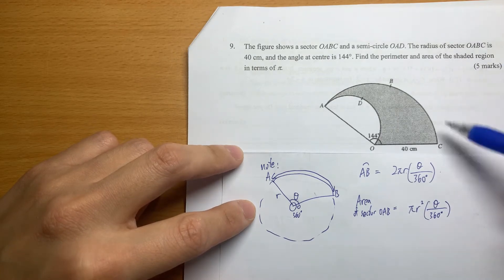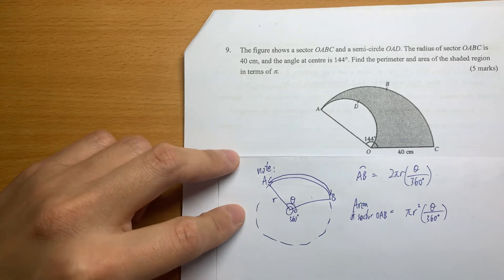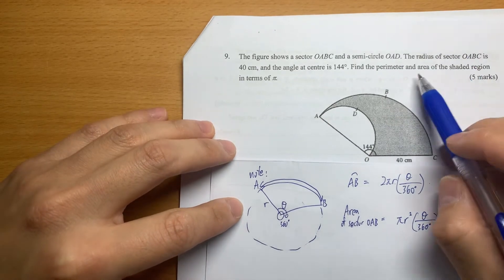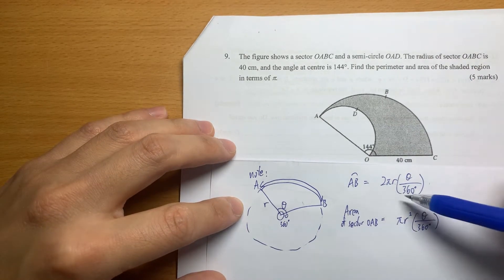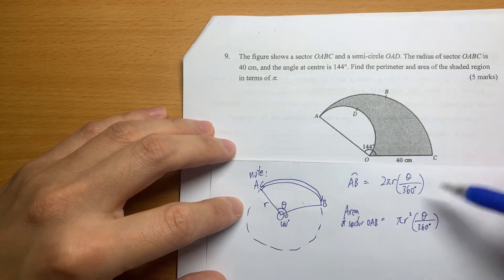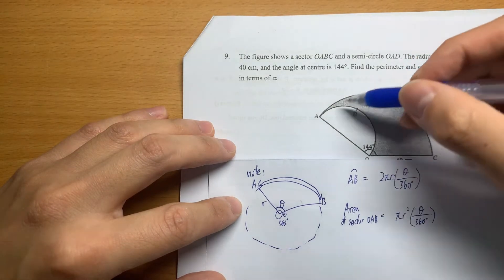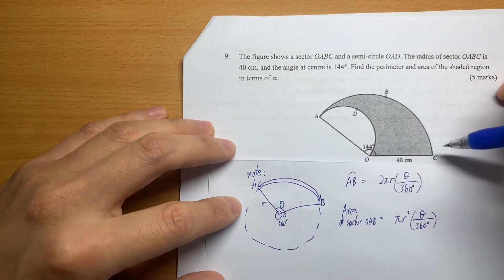So that's the formula for the arc length and the area. Which one to use is based on the question - which one is given or which one we need to find out.